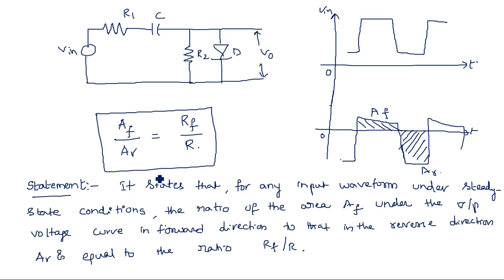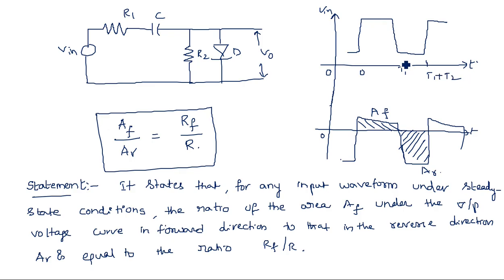So the clamping circuit theorem states that the ratio of the area in the forward direction to the area in the reverse direction is equal to the resistor ratio rf/r. Now let us consider the time intervals: 0 to t1 is the first interval and t1 to t1+t2 is the second interval.